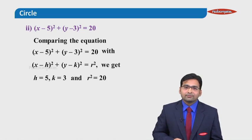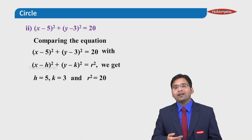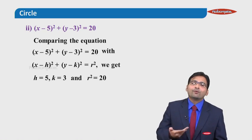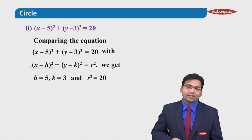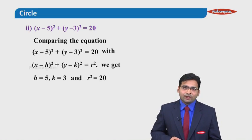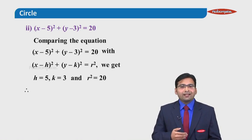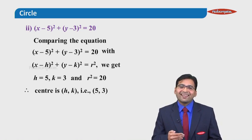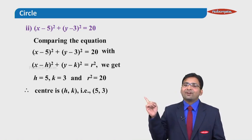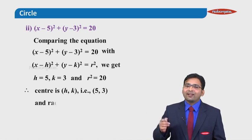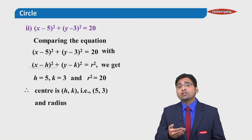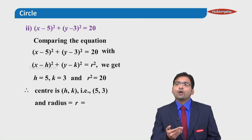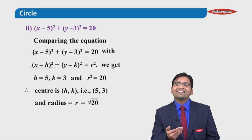From the right-hand side, r squared equals 20, so r equals square root of 20. The center of the circle, (h, k), is (5, 3) and the radius is root 20, which simplifies to 2 root 5.